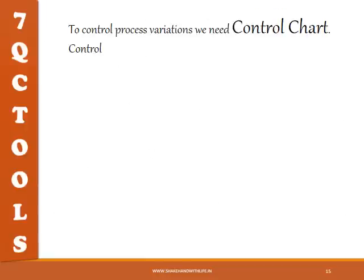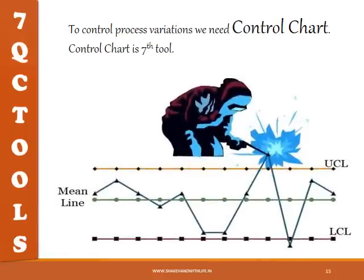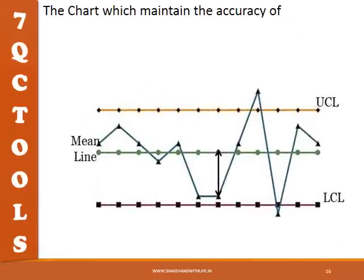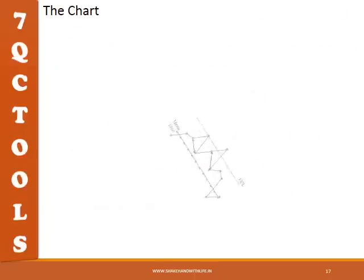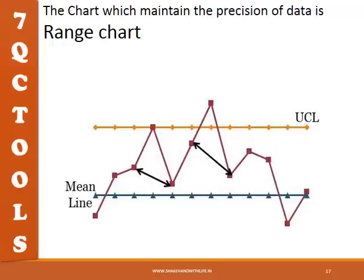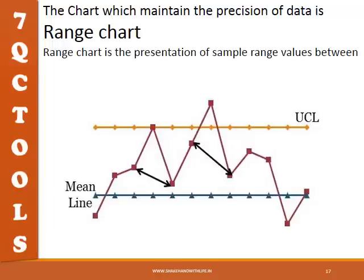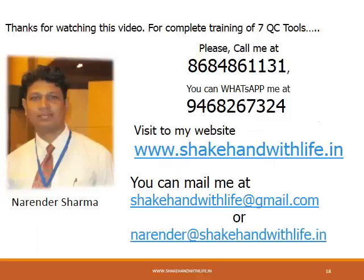To control process variations, we need the control chart — the seventh tool. The mean chart maintains the accuracy of the data and presents sample mean values between the upper control limit and lower control limit. The range chart maintains the precision of the data and presents sample range values between the control limits.